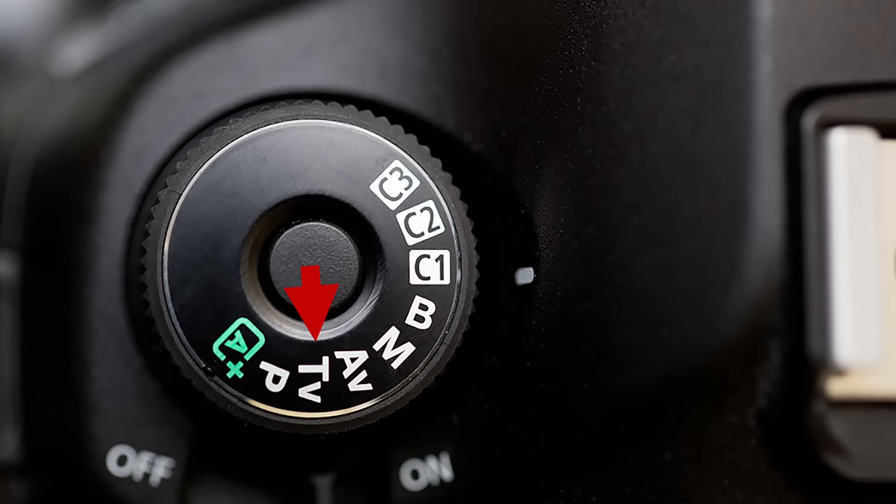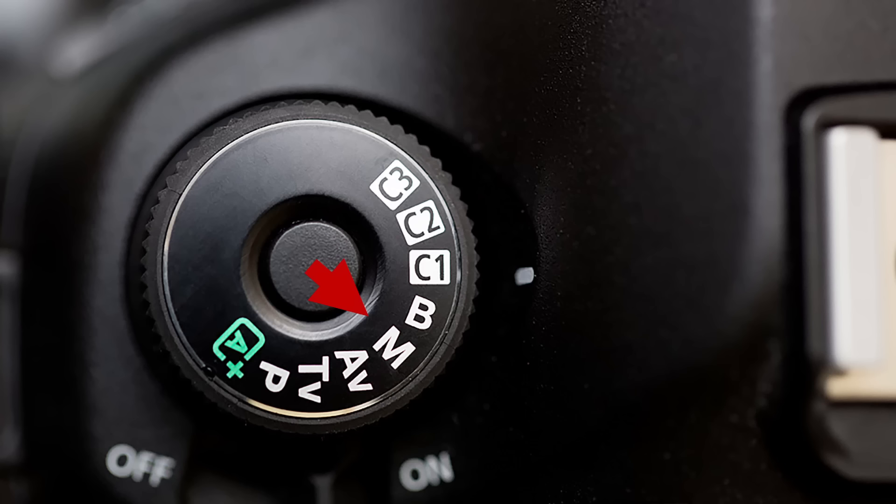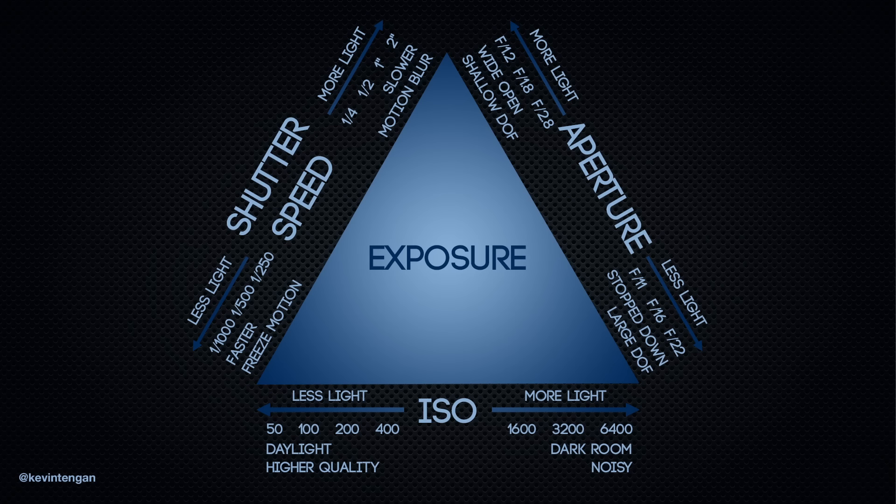If you're shooting in automatic or programmed mode of your DSLR, it's time to graduate to full manual. Shooting in manual gives you complete control over the exposure of your photo. There are three settings that control exposure: shutter speed, aperture, and ISO. Changing one of the settings means you have to change the other two to compensate and create a properly exposed photo. We're going to keep this very simple and essentially lock down two of those settings, which means there's only one left for you to play with.